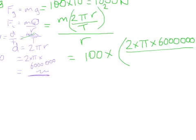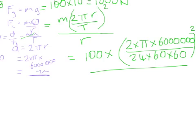...over the period, which was 24 times 60 times 60, and that's all squared. And we divide that by the radius of the earth, which is again 600,000.